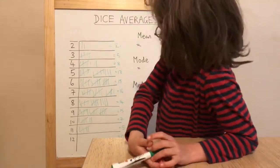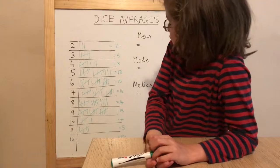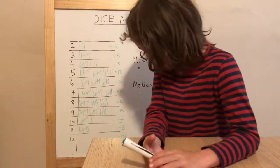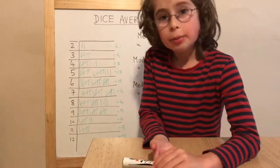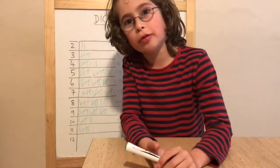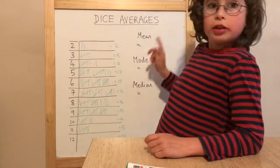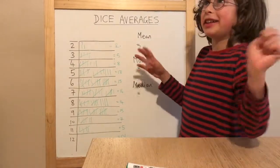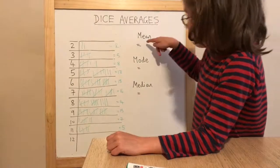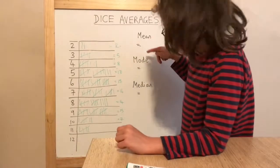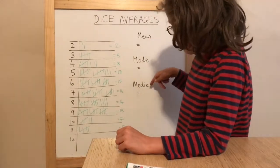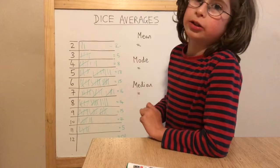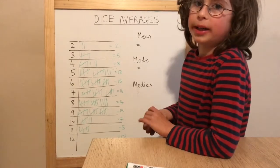You can see our result wasn't exactly to plan, but we still got a good result. The mode, mean, and median — these three words have magically appeared. I'm gonna call it 'medium' because it's a lot like medium.